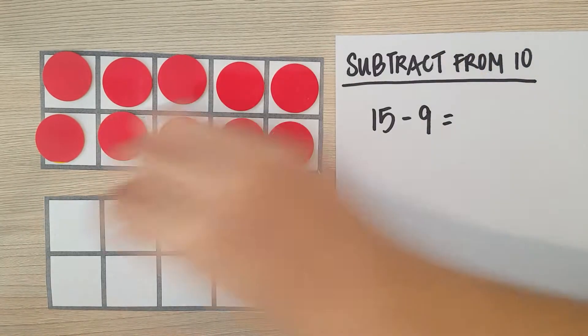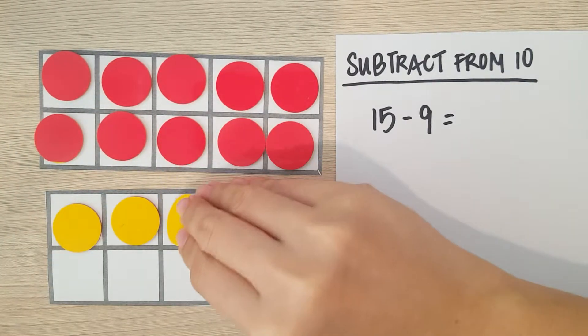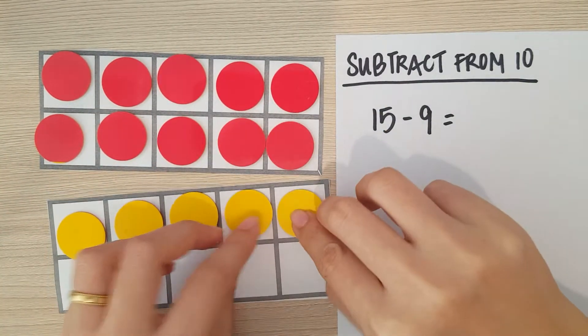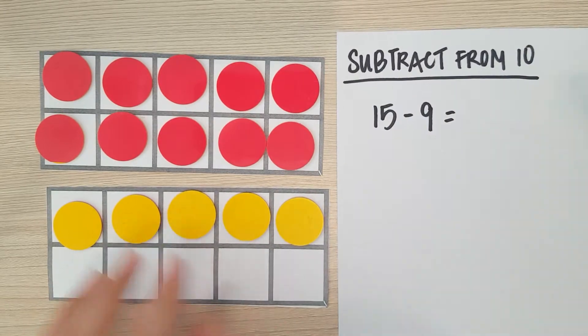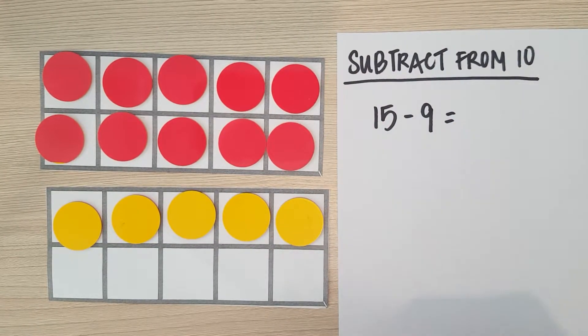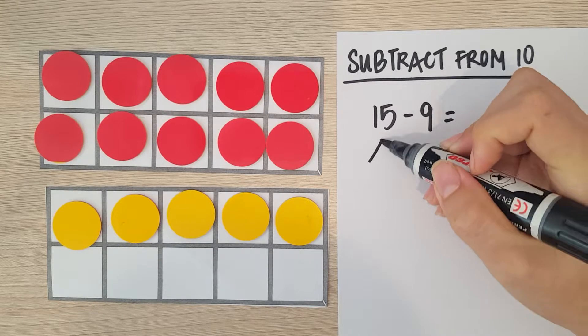10 and 5. So 15 is made up of 10 and 5, and that's what I'm going to write here.